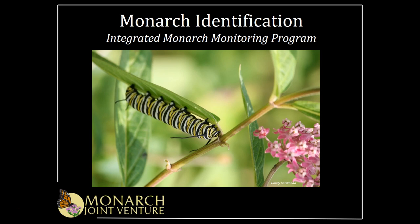Welcome to the online training for the Integrated Monarch Monitoring Program, or IMMP. This video is a companion to the online training for the IMMP, which is a program to collect data on monarchs and their habitats across their breeding range. In this video, you will learn more about monarch identification. We will describe the physical characteristics of monarchs, some of their biology, how to distinguish the different life stages of monarchs, and how to differentiate them from other similar species.